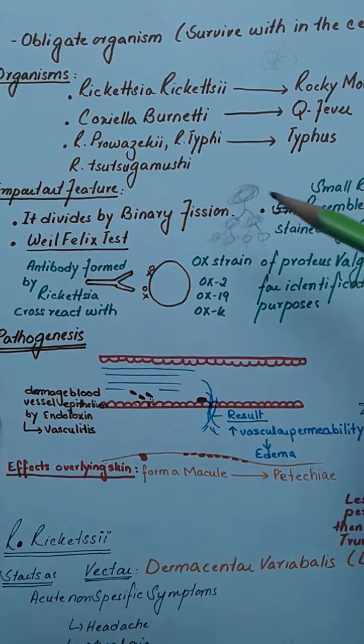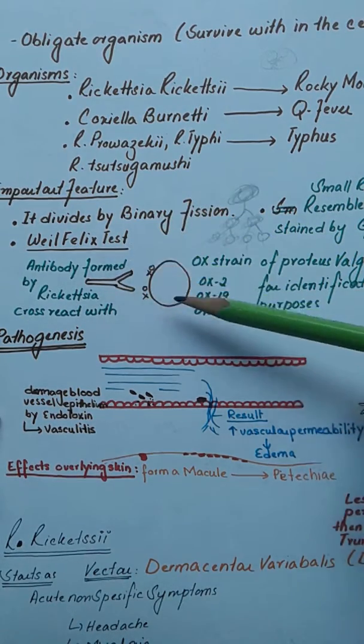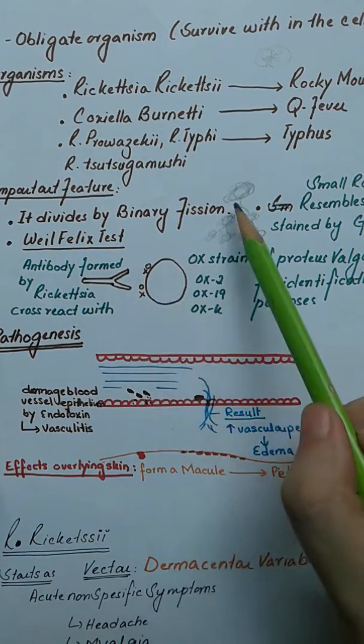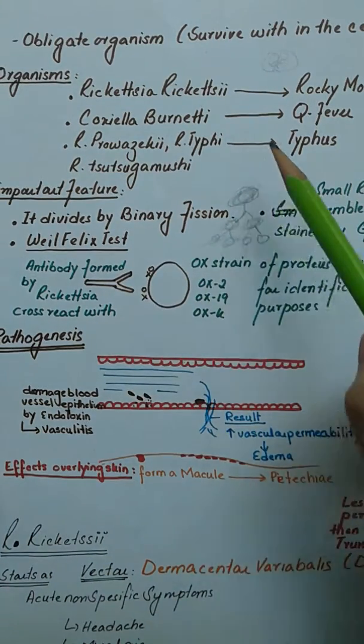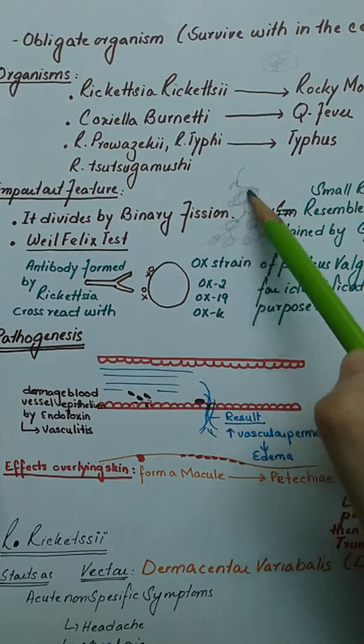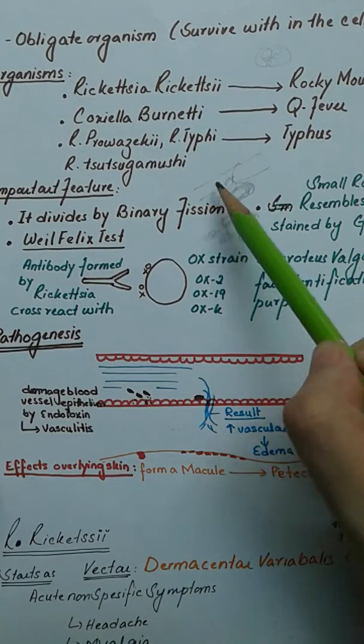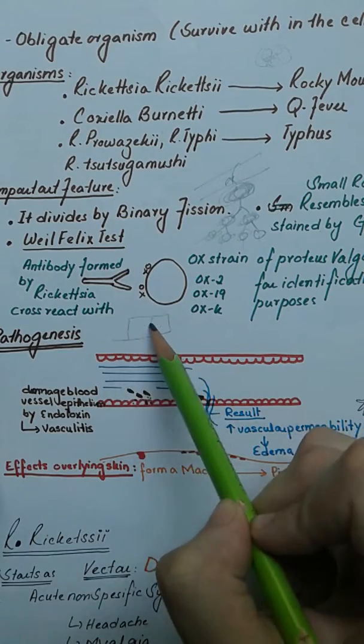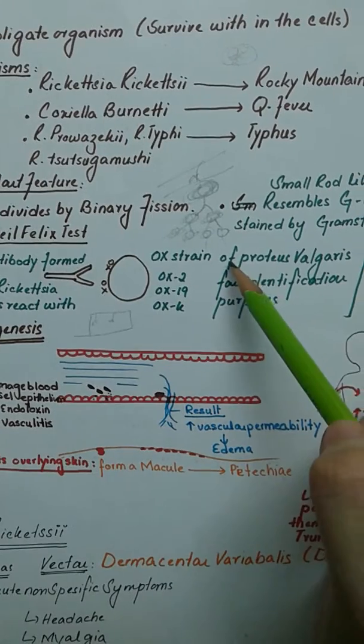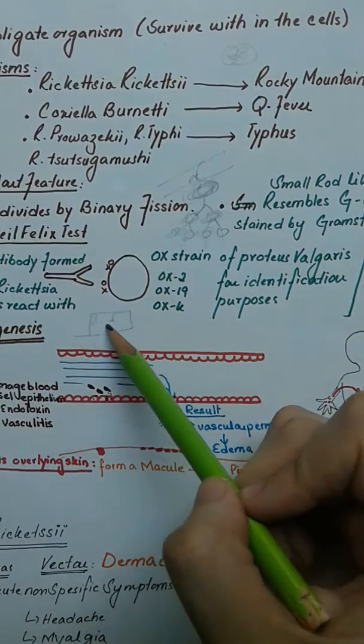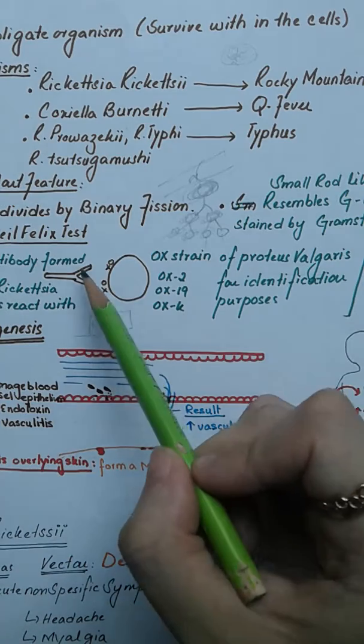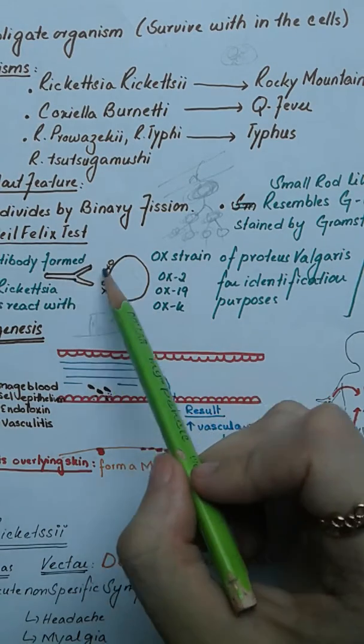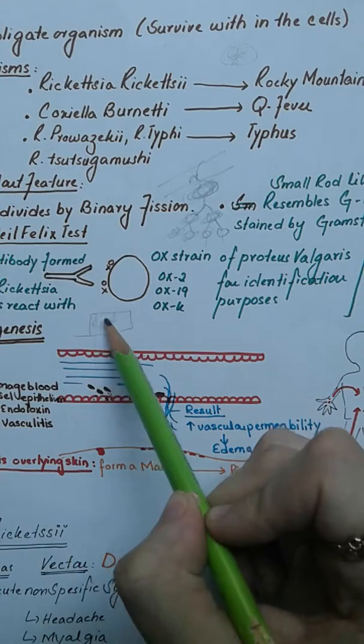To identify this organism, we do a Weil-Felix test. This is a primitive test not currently used much. If we detect that a body has Rickettsia, antibodies would have developed. We take the serum containing these antibodies and cross-react them in a medium containing OX strains of Proteus vulgaris. The antibody attaches to the OX strain (OX-2, OX-19, or OX-K), causing the culture to agglutinate, allowing us to identify which Rickettsia is present.